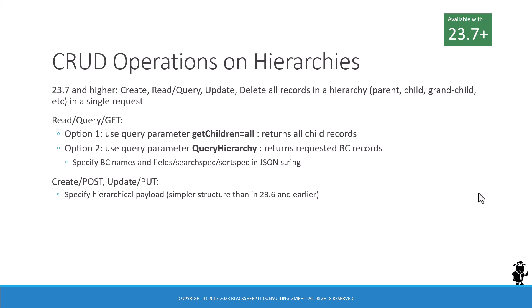There is a second parameter which you can use alternatively, called queryHierarchy. Its value is a JSON string where you can specify the names of the business components you want to query, the fields you want returned, and optionally a search spec and sort spec for each business component. This gives you much finer grain in your query than the first parameter getChildren=all.